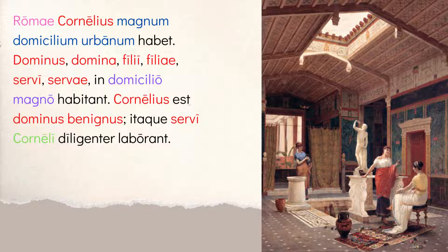The spelling is telling you that magnum cannot possibly be describing Cornelius — we're not saying 'big Cornelius has a house.' Magnum is describing domicilium. You can hear it in the pronunciation: magnum domicilium makes more sense than Cornelius magnum — us versus um, it doesn't quite sound right. So by speaking aloud you probably catch it, and by looking at the endings you can figure out which word the adjective is describing.